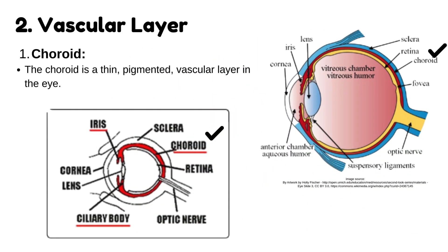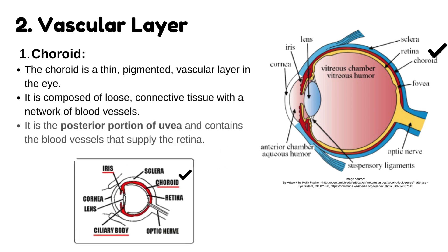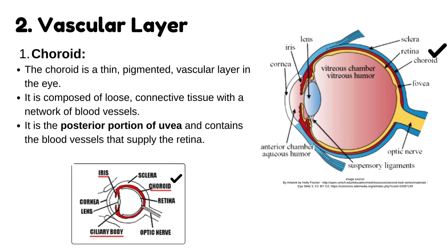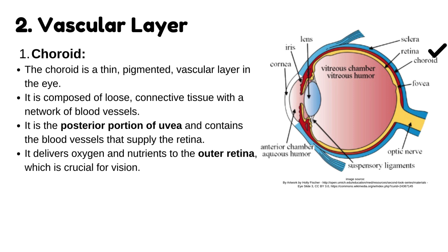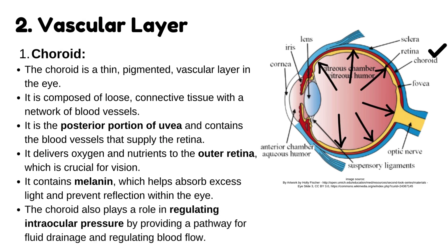The choroid is a thin, pigmented, vascular layer in the eye composed of loose connective tissue with a network of blood vessels. It is the posterior portion of the uvea and contains the blood vessels that supply the retina, delivering oxygen and nutrients to the outer retina, which is crucial for vision. It contains melanin, which helps absorb excess light and prevent reflection within the eye. The choroid also plays a role in regulating intraocular pressure by providing a pathway for fluid drainage and regulating blood flow.